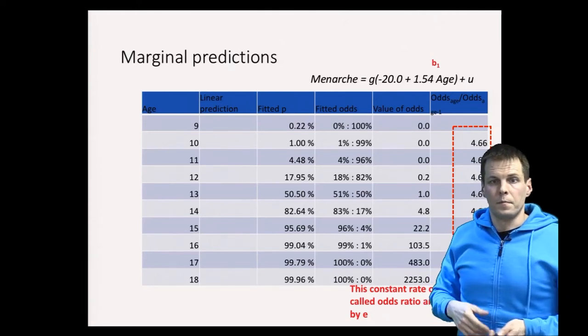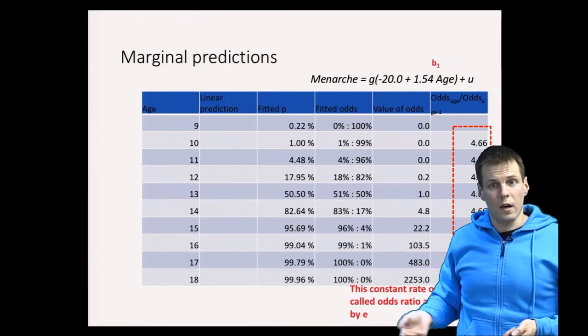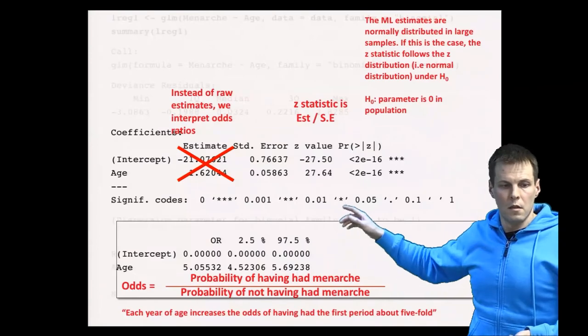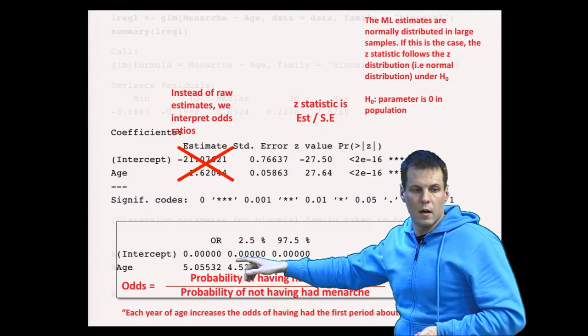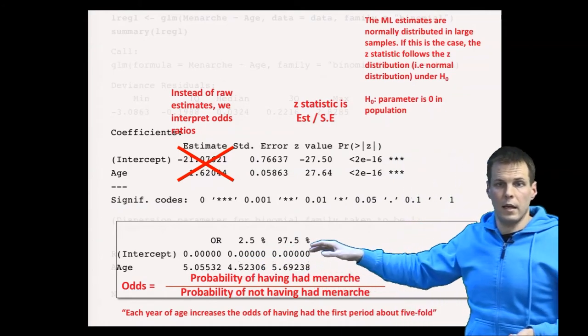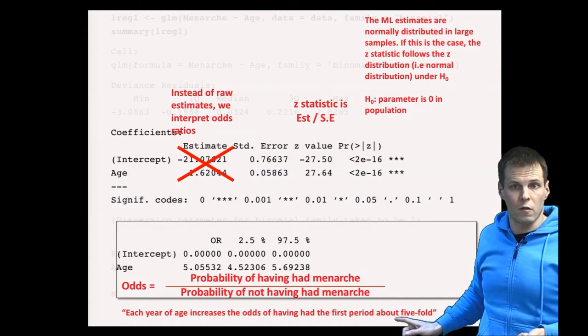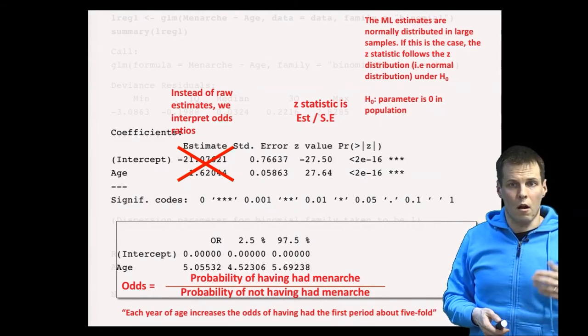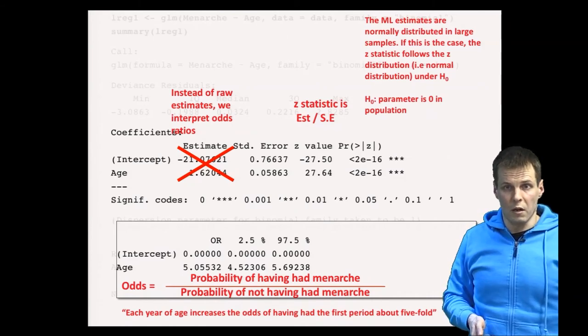And how we use that in regression analysis? Well, we calculate the odds ratios, and this is for the actual data. So we calculate the odds ratio, which is about five, and the interpretation is that each additional year of age increases the odds of having had menarche by fivefold. So that kind of quantifies how large is the effect of age. We know that if something is increased fivefold, then it's pretty large effect.